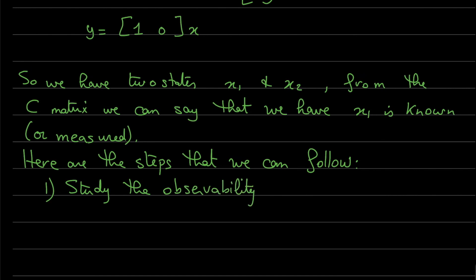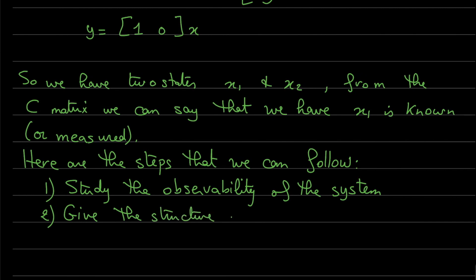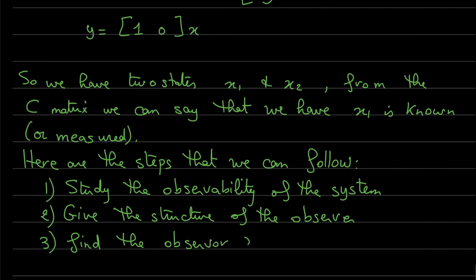First, we have to study the observability of the system. Second, we have to define the structure of the observer. And finally, we have to find the observer gain L.